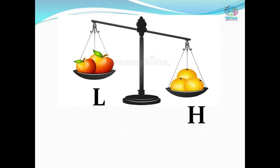See here in this pan balance, one pan has two apples and the other pan has three oranges. The pan which goes down is heavier and the pan which goes up is lighter. So three oranges are heavier than two apples.